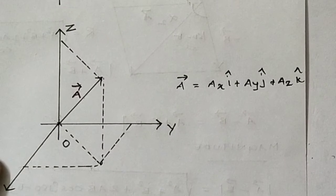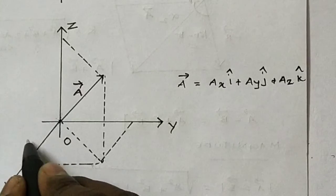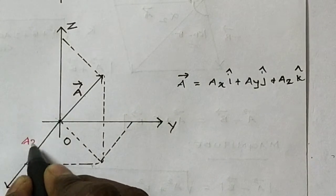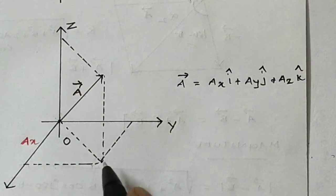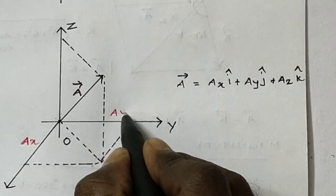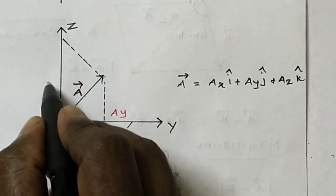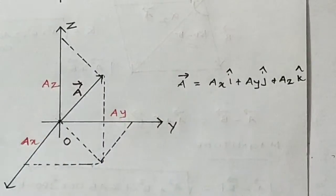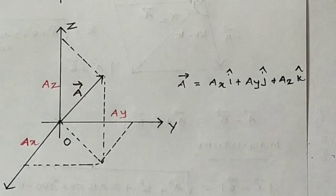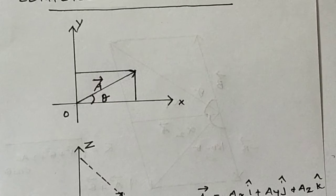Here, AX means the X component of the A vector. AY means the Y component of the A vector. AZ means the Z component of the A vector. Now moving to the 2-dimensional case.